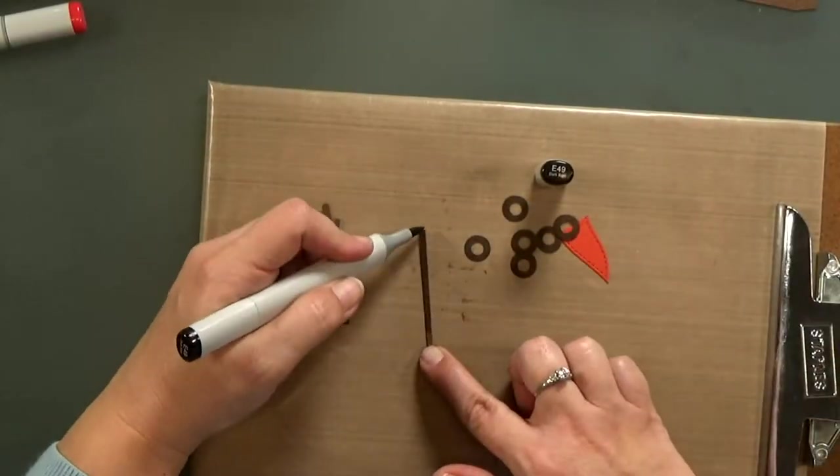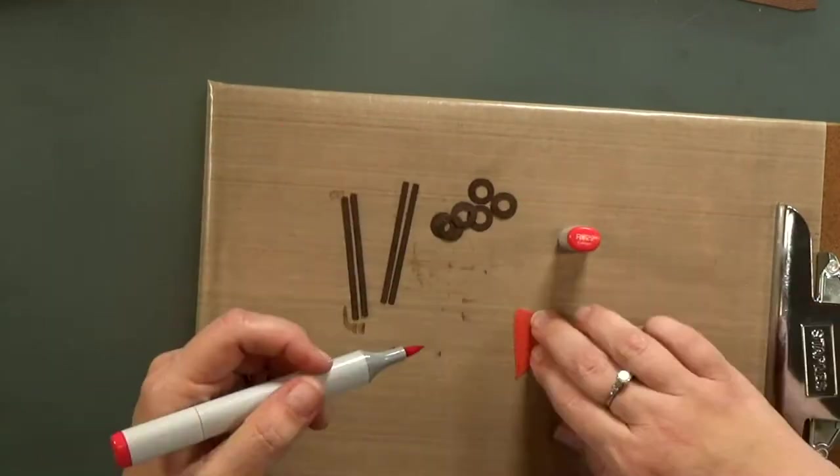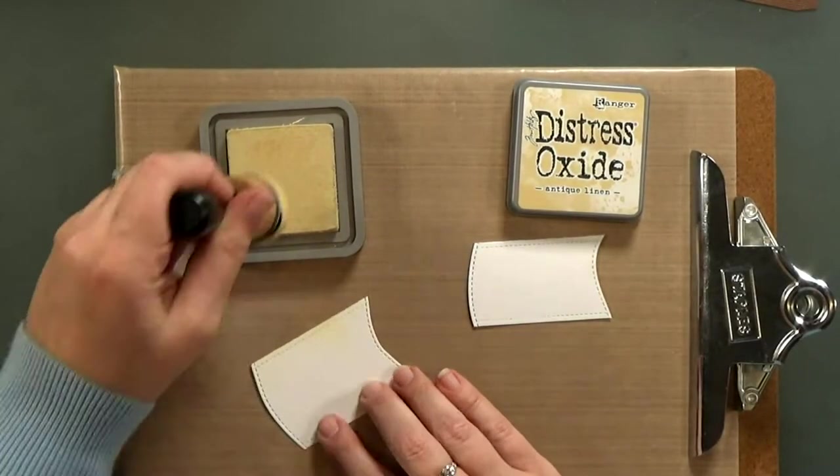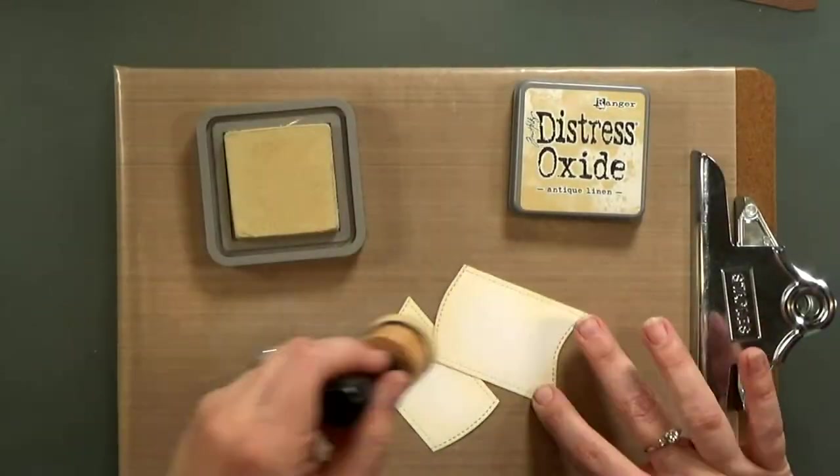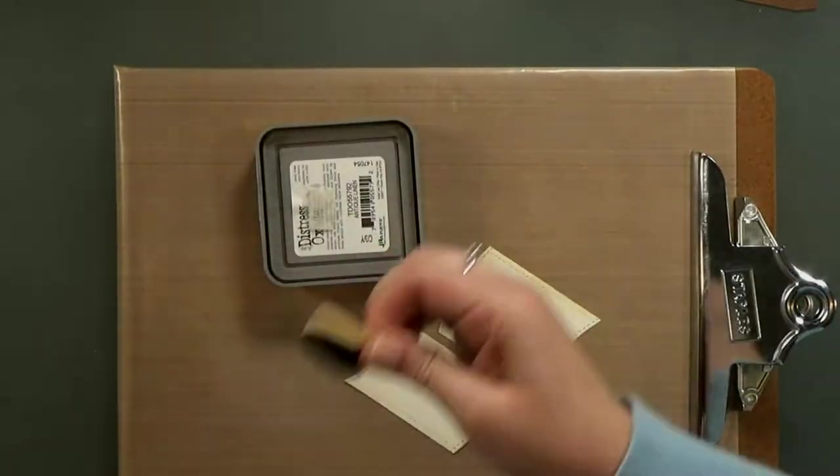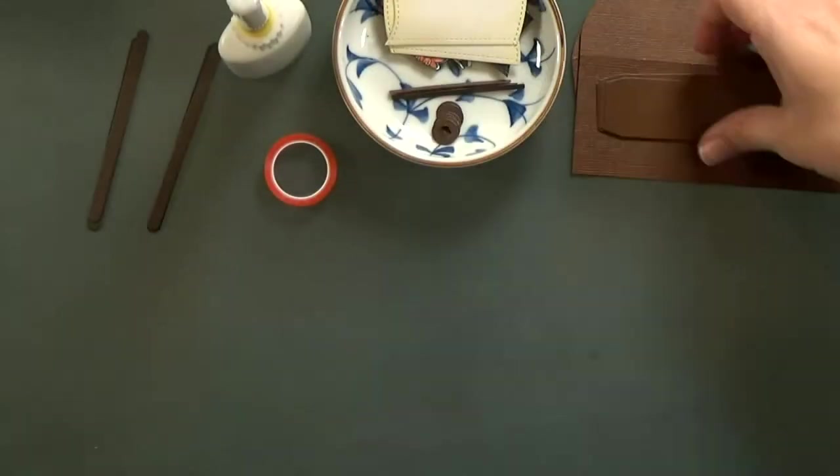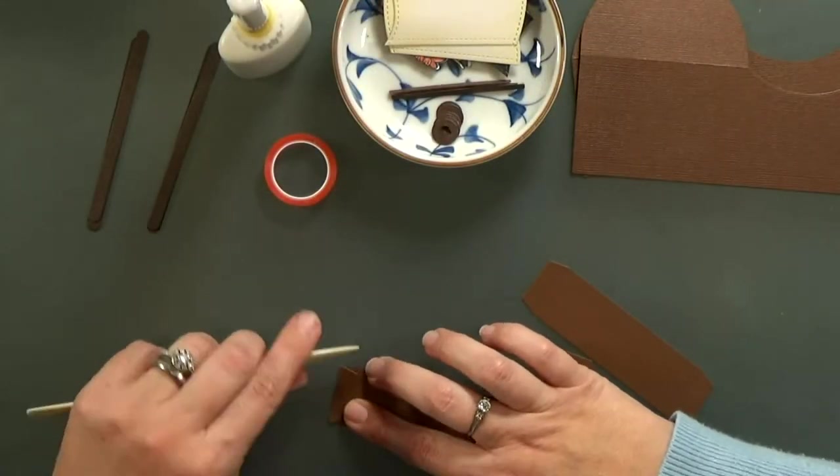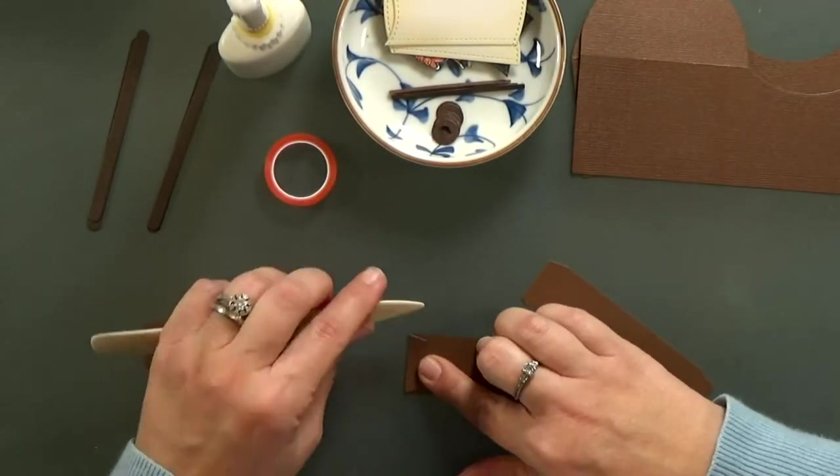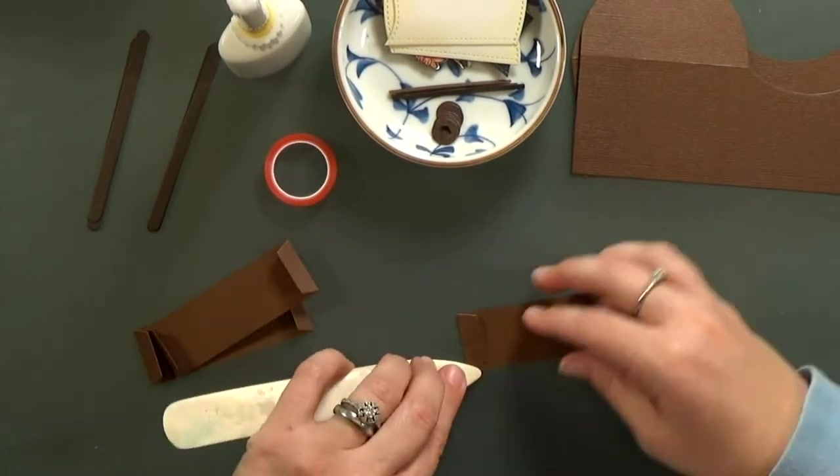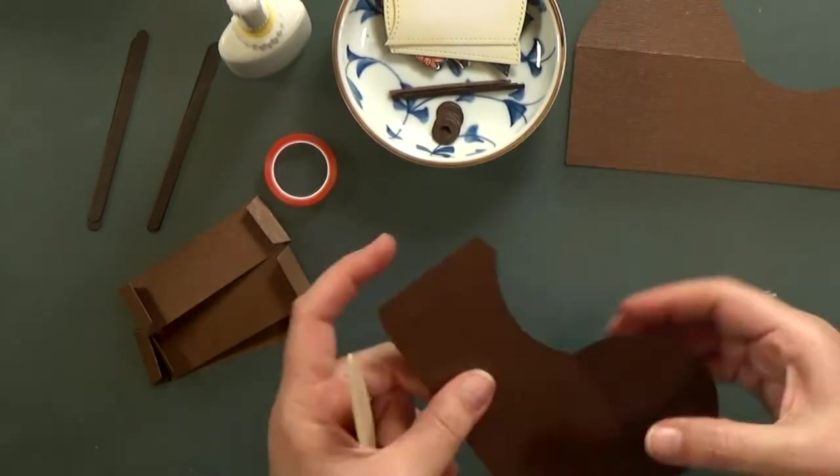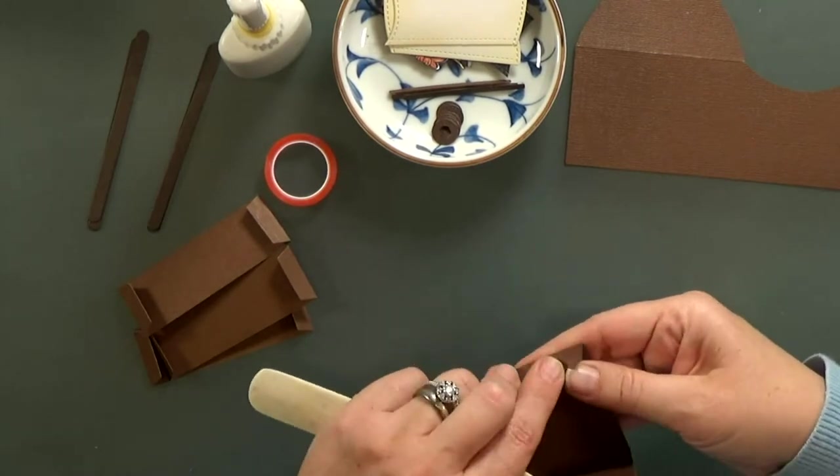Then I'm going to darken up my portholes and my bowsprit pieces and I'll shade that red flag. I used some antique linen distress oxide on the sails to make them look like sun bleached canvas. Then I'm going to use my bone folder and I'm going to fold all my score lines and reinforce the fold so they're nice and flat.